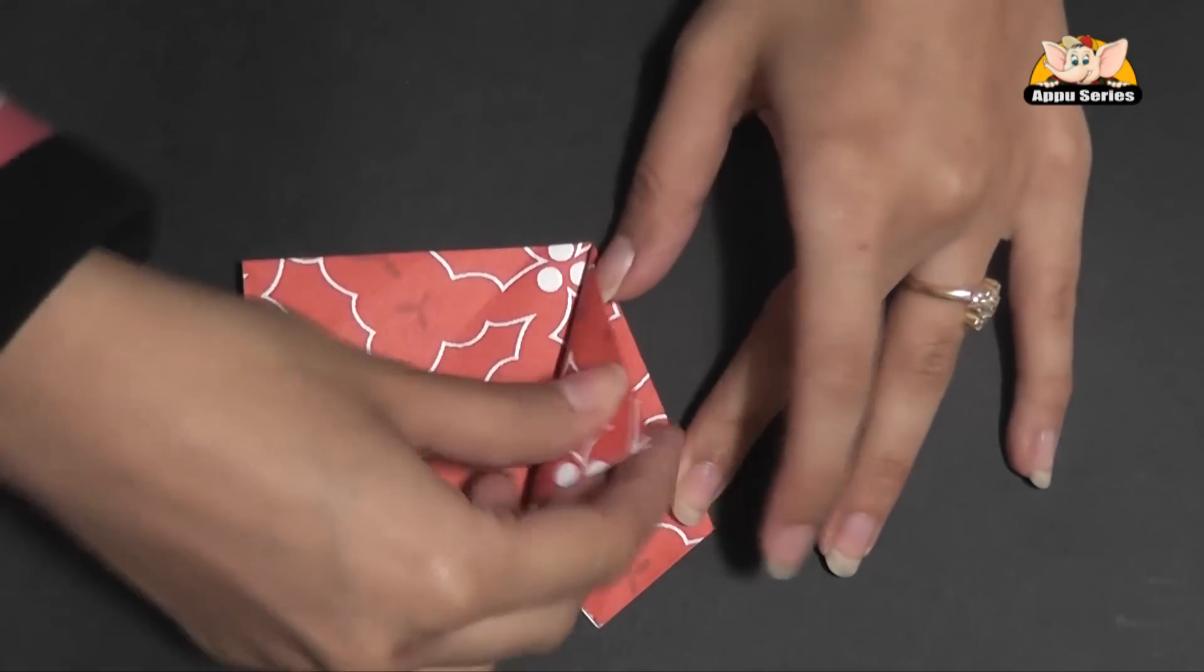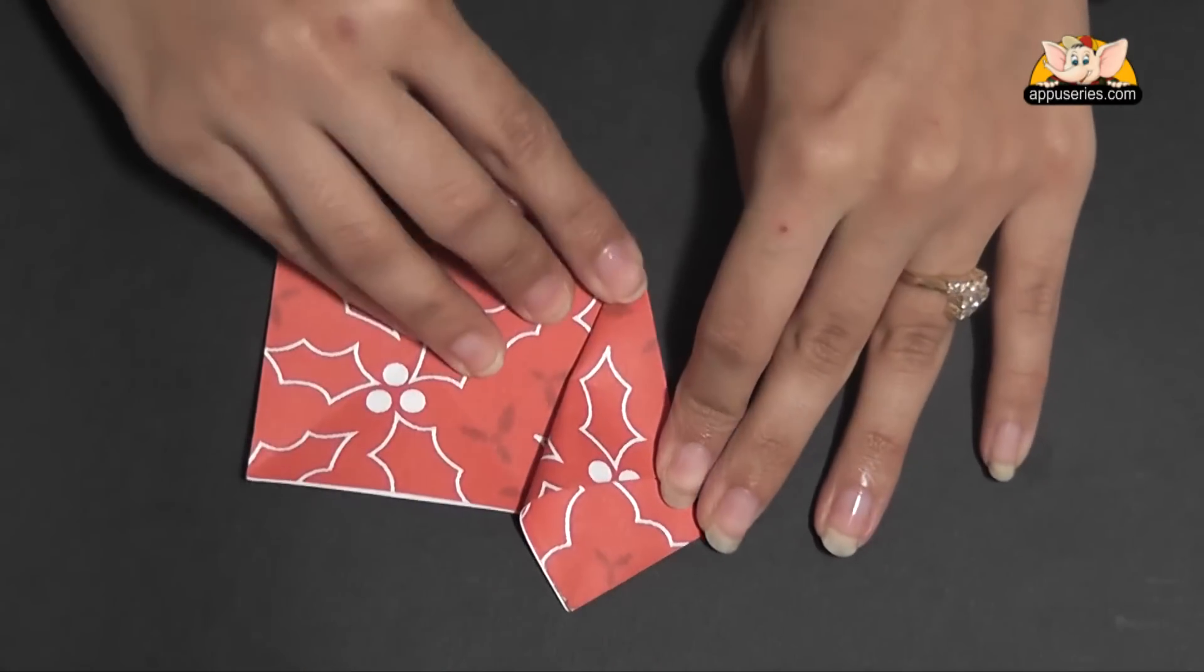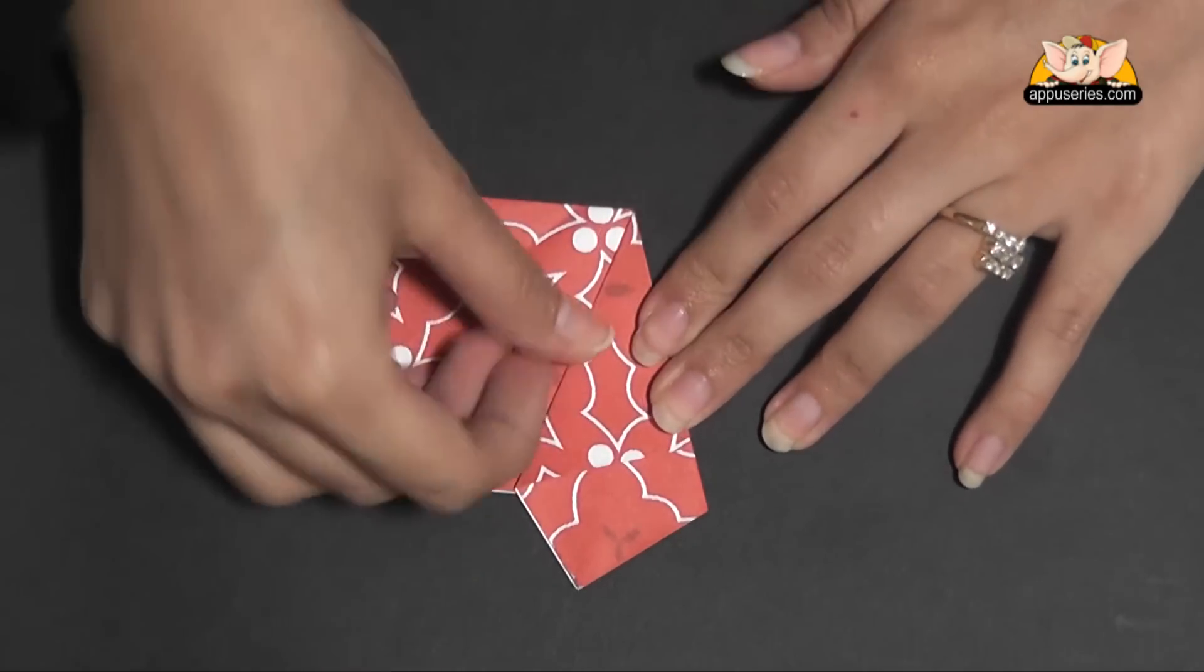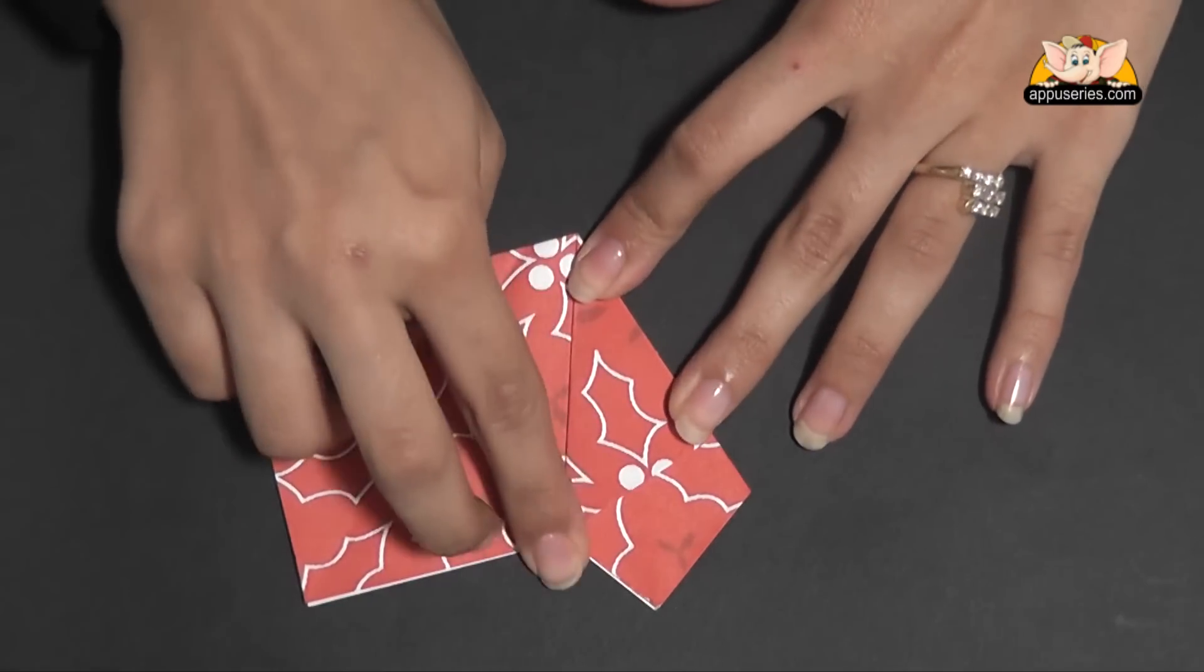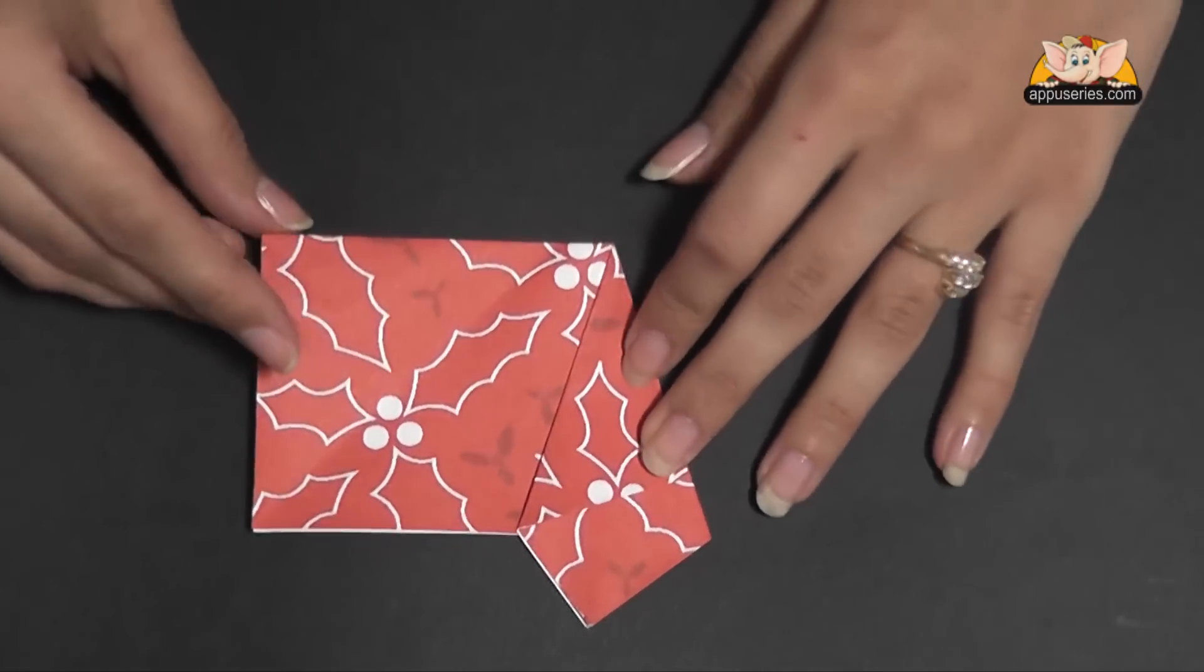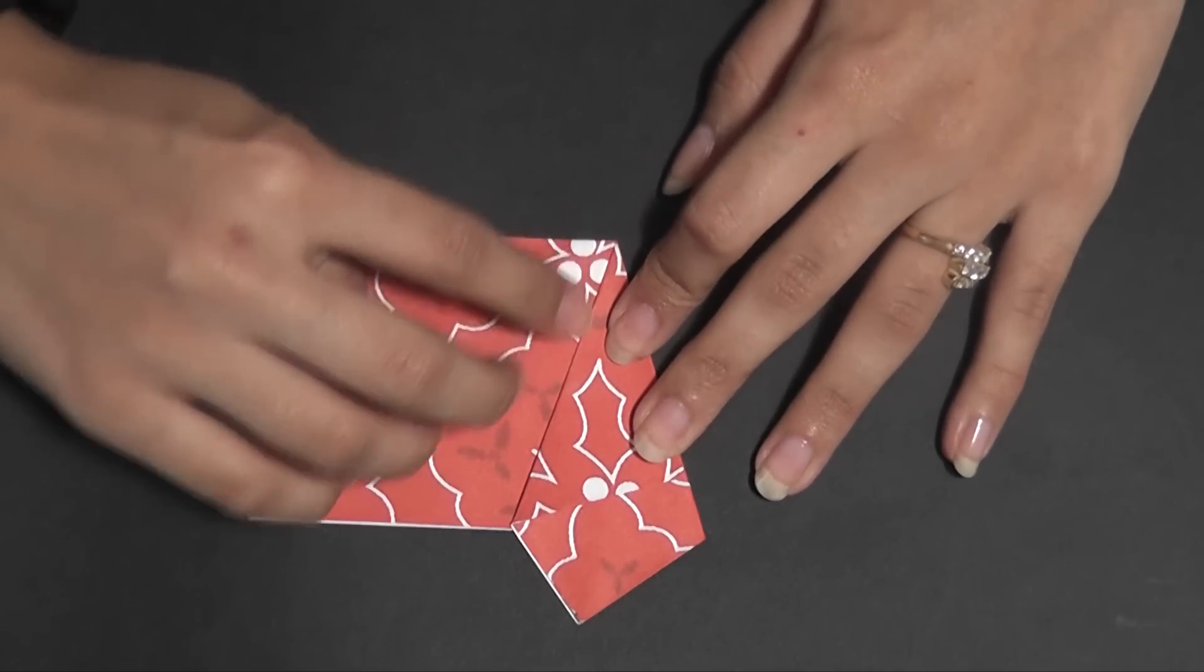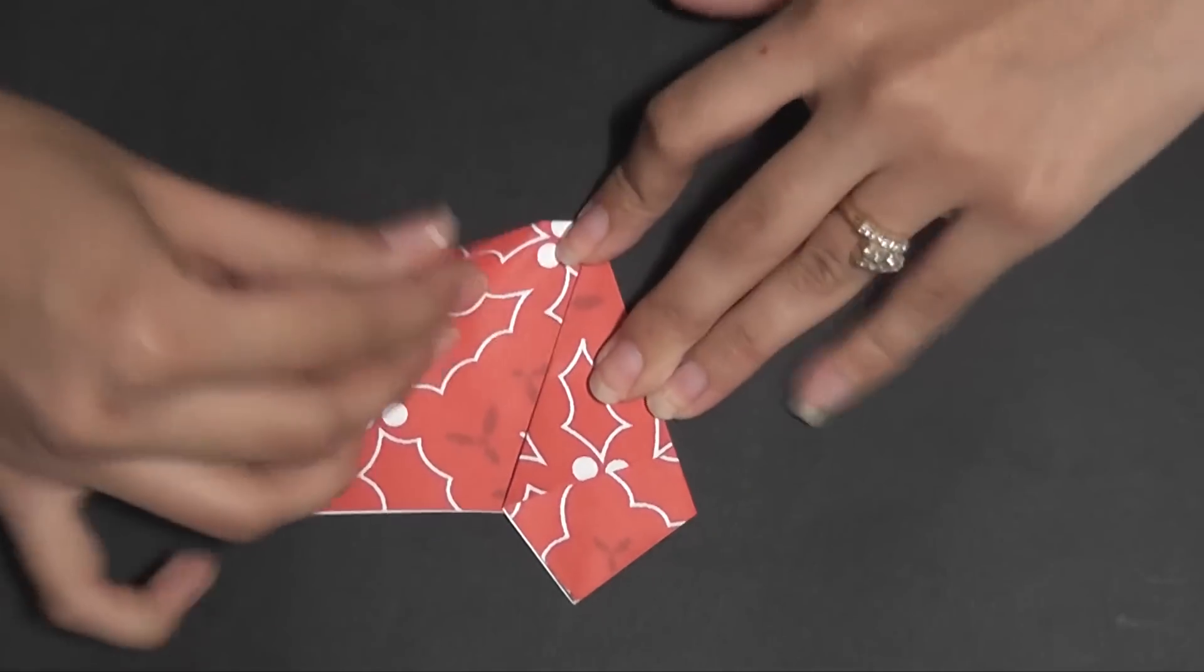Now we are going to fold back this edge to meet this edge. Make sure you have neat corners. Then taking this edge, we will fold it so that it aligns with this edge here.